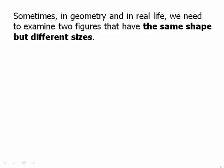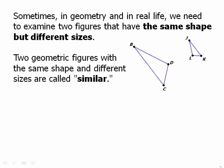Sometimes in geometry and in real life, we need to examine two figures that have the same shape but different sizes. Two geometric figures with the same shape and different sizes are called similar. Those two shapes shown here — the second one is a smaller copy of the first one. Again, it's in a different orientation; it's been flipped around and rotated a little bit. But that is, in fact, the same shape.